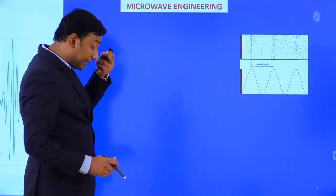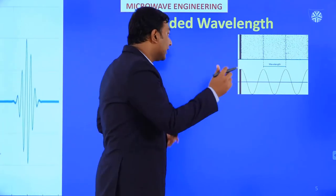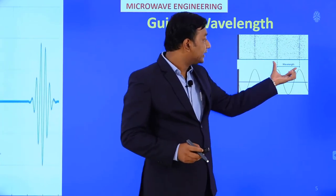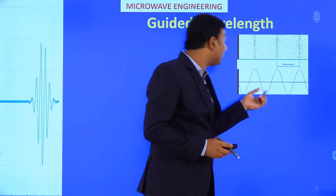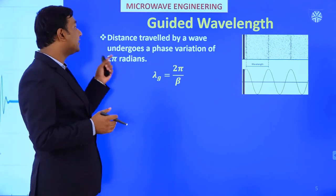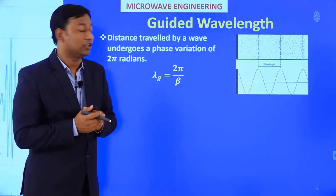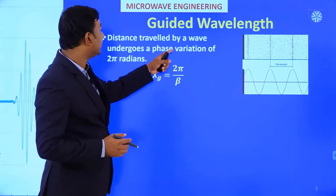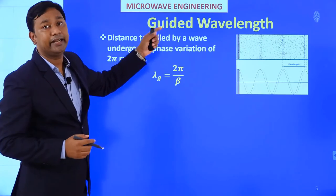In a waveguide there is another wavelength called the guided wavelength, because in a waveguide there are multiple reflections and the wave propagates through the medium. The guided wavelength is the distance traveled by the wave undergoing a phase variation of 2π radians. So λg = 2π/β.